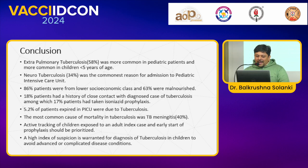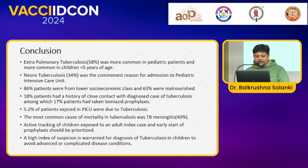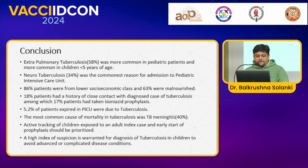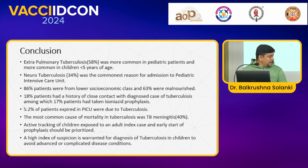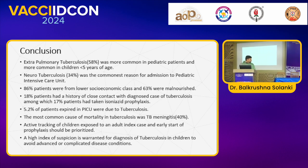In conclusion, extrapulmonary tuberculosis was more common in pediatric patients and more common in children under 5 years of age. Neurotuberculosis at 34% was the commonest reason for admission in the pediatric intensive care unit. 86% of patients were from the lower socio-economic class and 63% were malnourished. CBNAAT was positive and radiological diagnosis was achieved in 75% of cases.